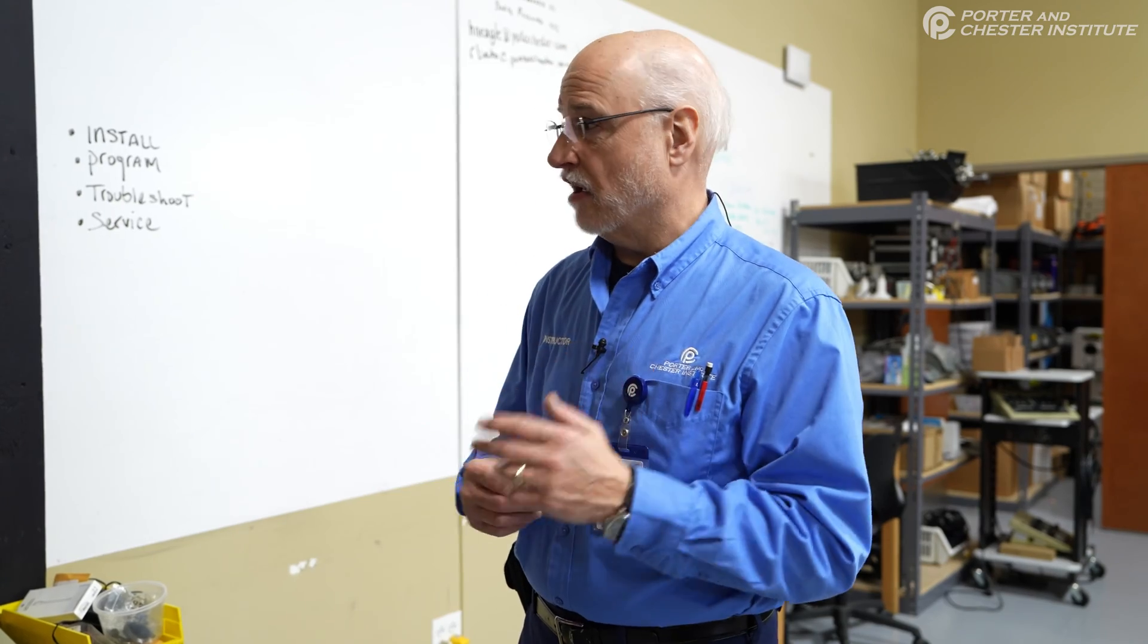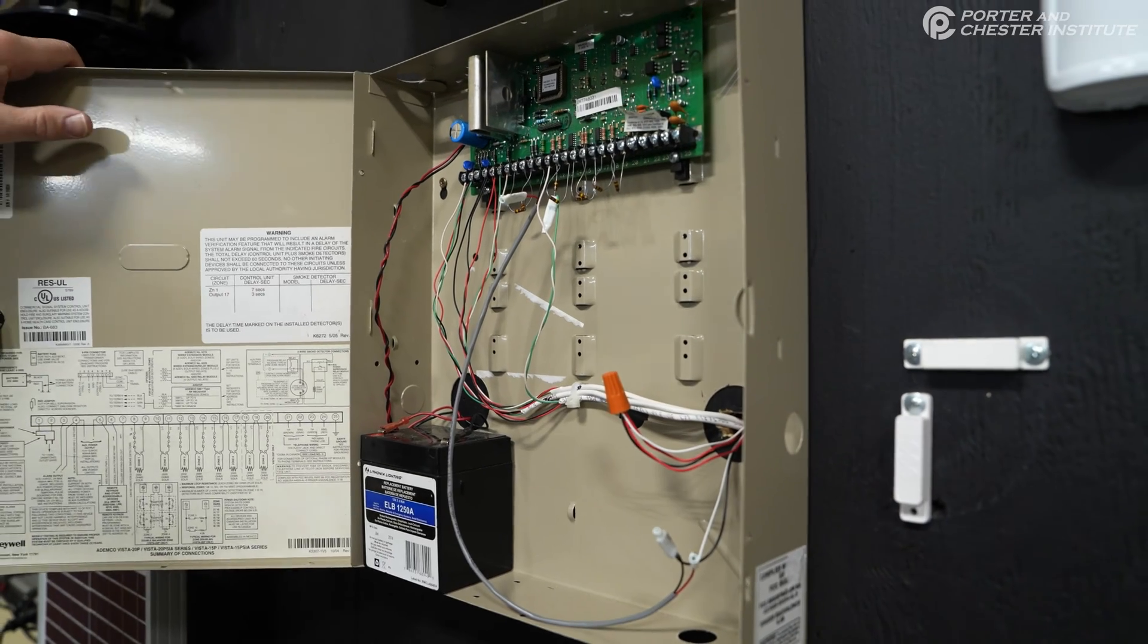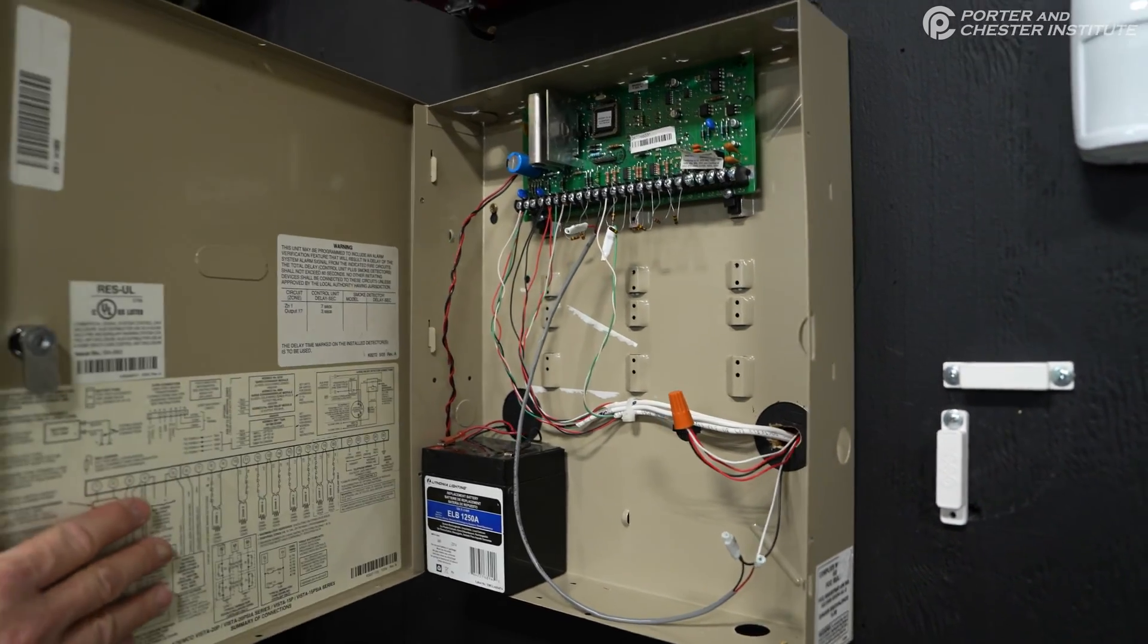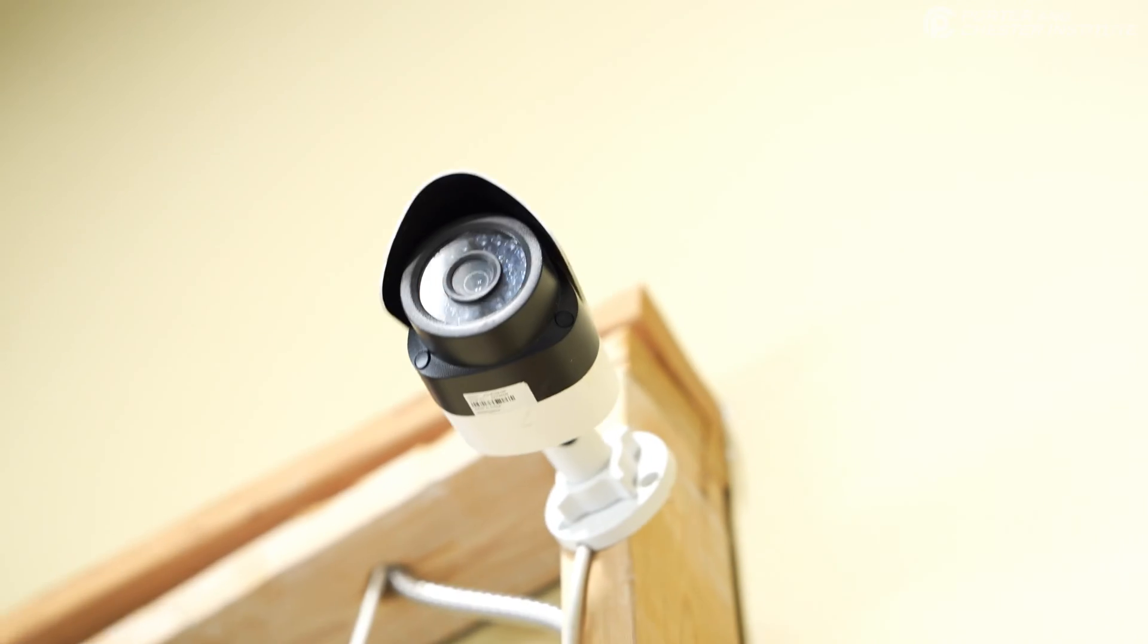Another elective system that they don't have to have would be a burglar alarm system. But most businesses, some residences, have a burglar alarm system. Same thing with camera systems. They're not required by code, but most businesses today have camera systems.